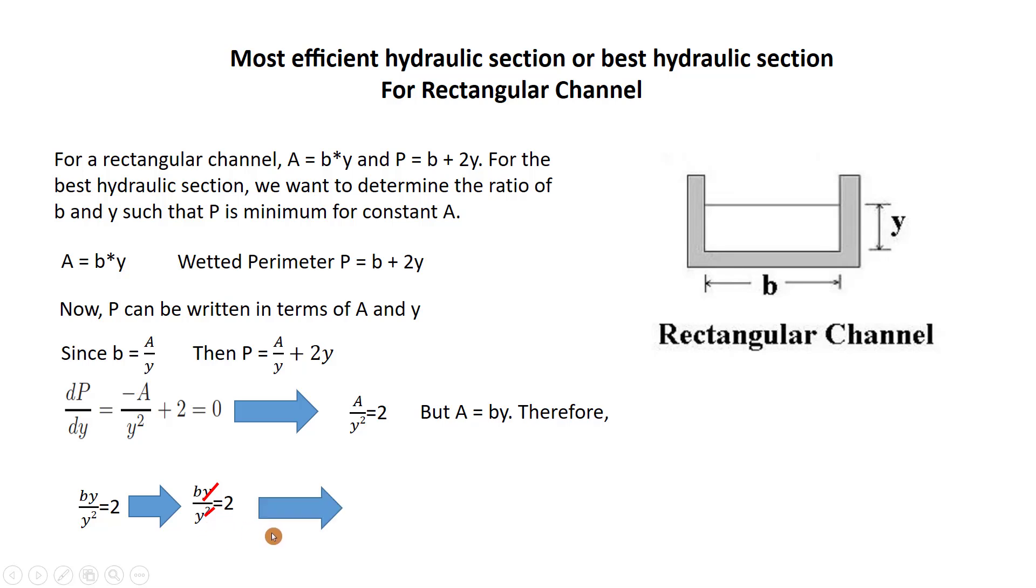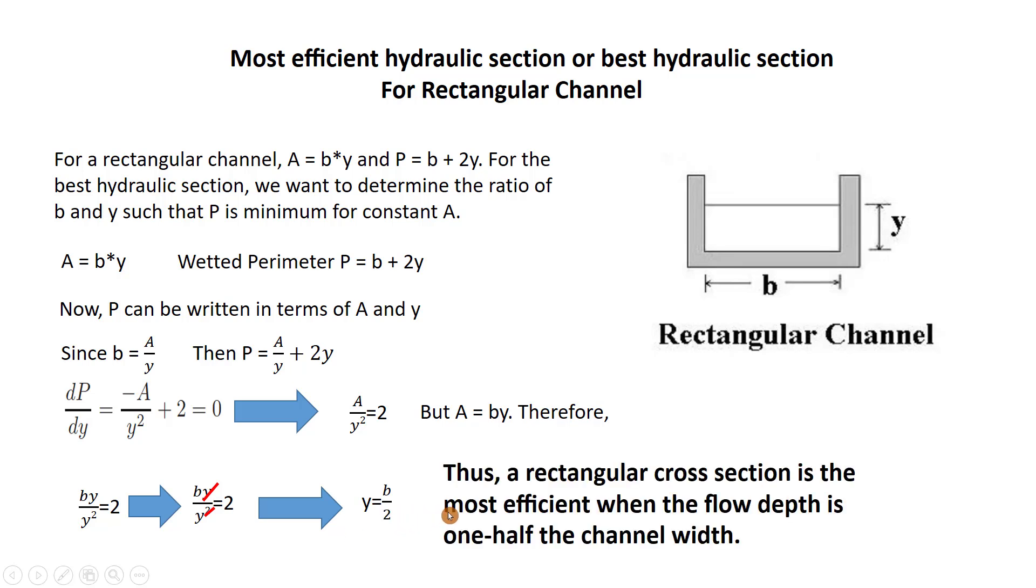So the relation will be Y equal to B/2. Thus a rectangular cross section is the most efficient when the flow depth is one half the channel width. That's all, I hope it can be helpful. See you in next tutorial, have a nice time.